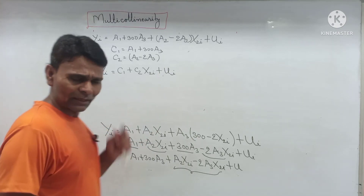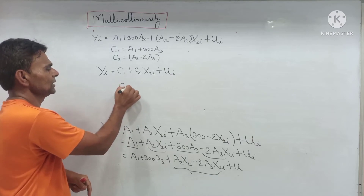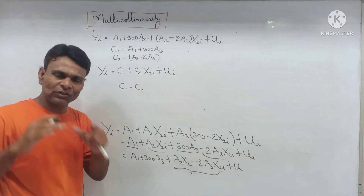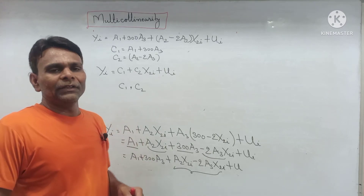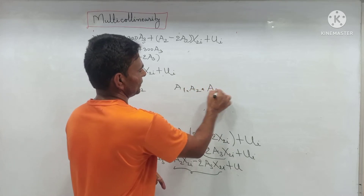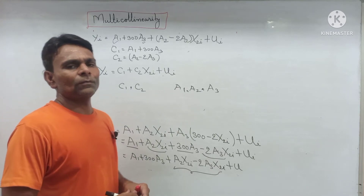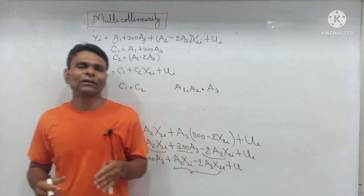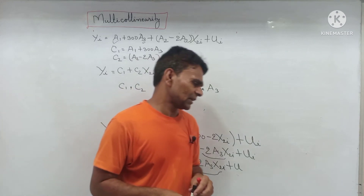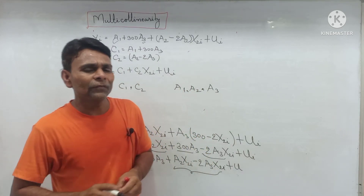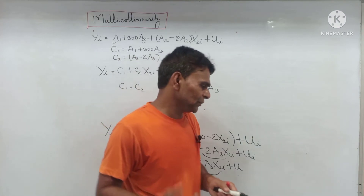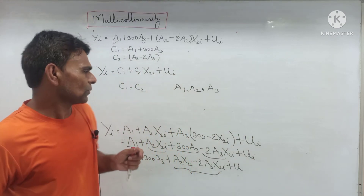We can easily estimate the parameters c1 and c2 using the OLS method. But we cannot obtain unique values of all the original parameters a1, a2, and a3. In the presence of perfect multicollinearity, we cannot get the unique values of these three original parameters, but we can get c1 and c2 as indirect parameters. Therefore, in the case of perfect multicollinearity, estimation and hypothesis testing of individual regression coefficients in a multiple regression model is not possible.